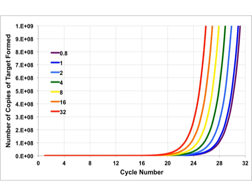Here's what that looks like if I actually chart it out with real numbers. I'm going to start off with different numbers of templates, and then watch these guys accumulate when I double that number each time. So here I'm starting off with 0.8 copies, whatever that means, and then one.